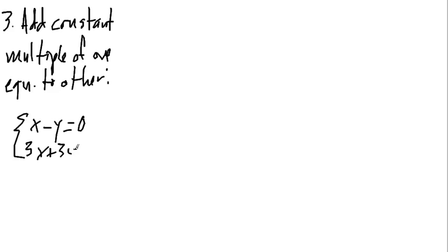And the third possibility is to add a constant multiple of one equation to the other. So, for example, if I start off with what I wrote before, X minus Y is equal to 0, and 3X plus 3Y is equal to 3. Let's add 3 times the first equation to the second.